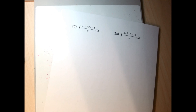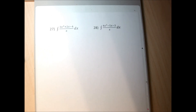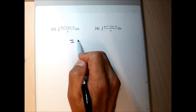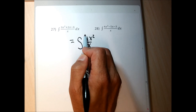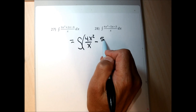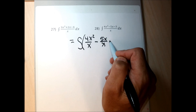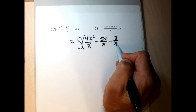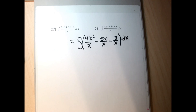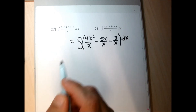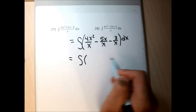Problems 27 and 28 have fractions, and I can't do antiderivatives well unless the problem is written as individual terms without multiplication or division. To get rid of the division in problem 28, I separately write each term in the numerator over the denominator and introduce parentheses. The fraction bar was keeping everything together; once I split it up, I simplify each resulting fraction.